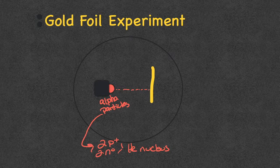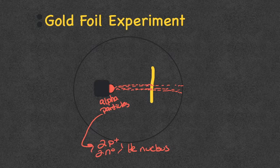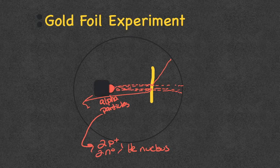Think of gold foil like aluminum foil, but made out of gold atoms. The alpha particle should hit an atom and something should happen, or it should just go straight through. And that is exactly what happened — when he shot these alpha particles, most of them just went straight through the gold foil. But every once in a while, one of these alpha particles hit something and ricocheted, or even came right back at him.